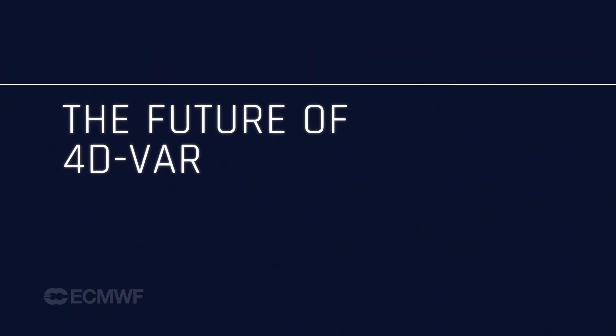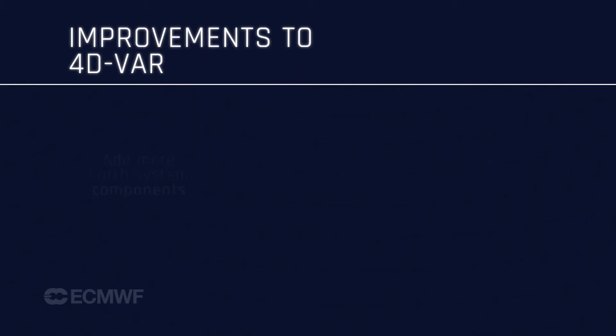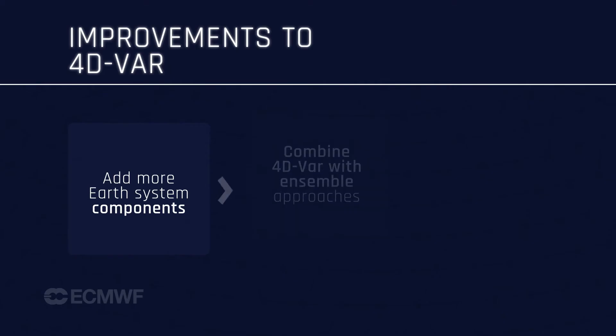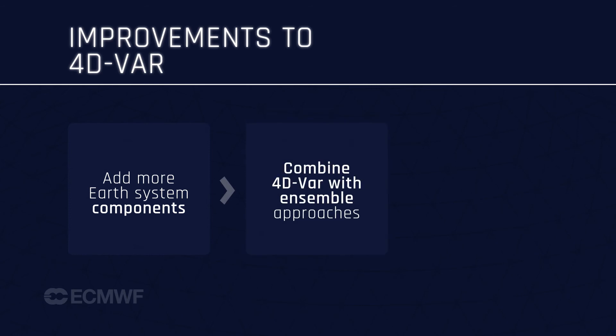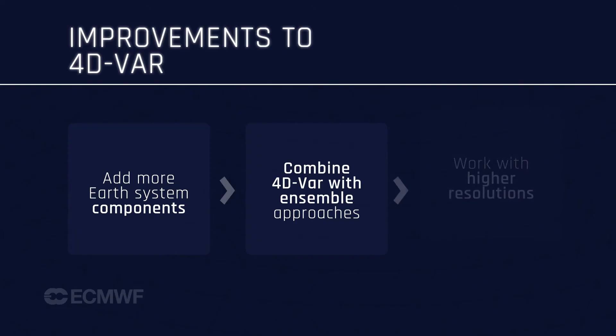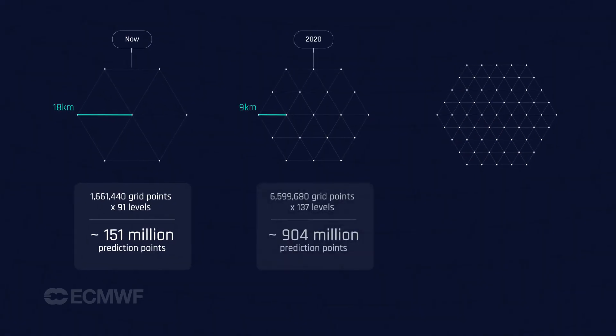4DVAR is being applied in worlds that it was never envisaged to be applied. In the next 10 to 20 years, we want to include more components. An ensemble component has been added to 4DVAR, which is used to estimate the uncertainty of the initial estimate. Better knowing the uncertainties improves the actual estimate of the state. We also want to go to higher resolution and would like to run an ensemble at 5 km in about 10 years' time.